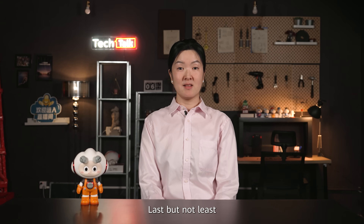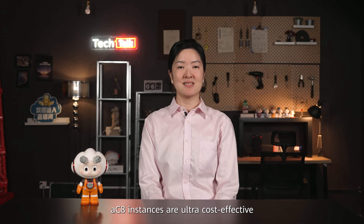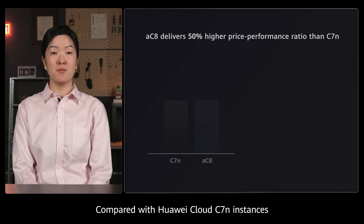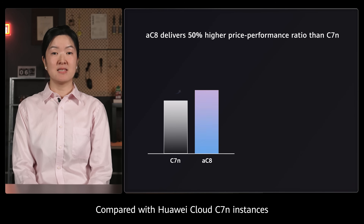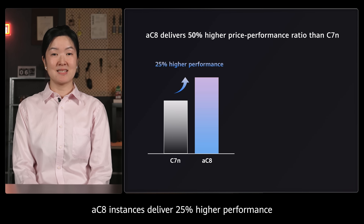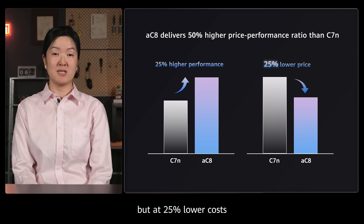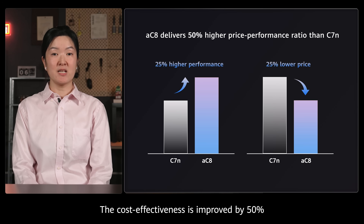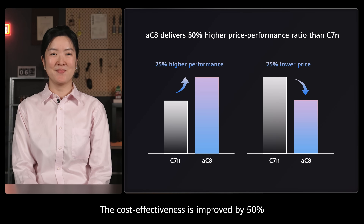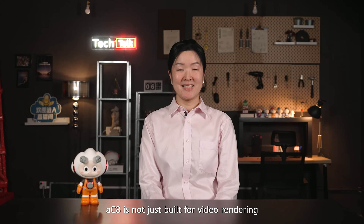Last but not least, AC8 instances are ultra cost-effective. Compared with Huawei Cloud C7N instances, AC8 instances deliver 25% higher performance but at 25% lower costs. The cost-effectiveness is improved by 50%.